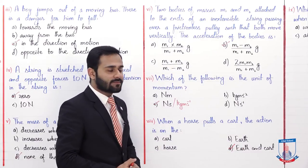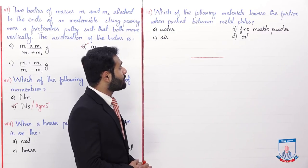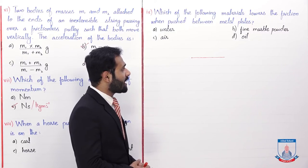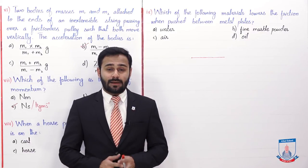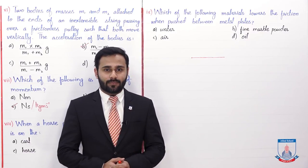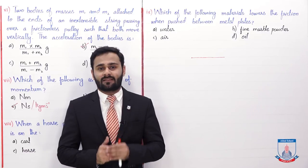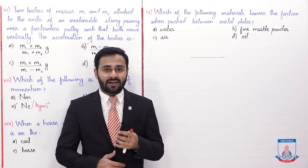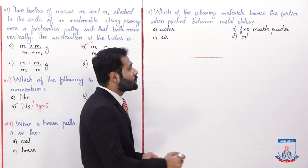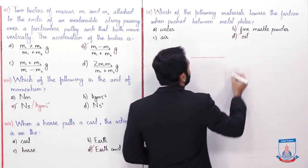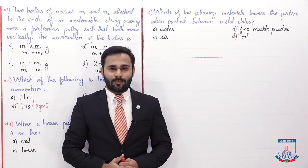Now the last MCQ: which of the following materials lowers the friction when pushed between metal plates? A water, B fine marble powder, C air and D oil. Which material reduces friction when you push it between the marble plates? We discussed a topic about methods to reduce friction - we can reduce friction by lubricating materials, and lubricating means oiling. According to these options, if you use oil you can reduce friction. So the correct option is D.